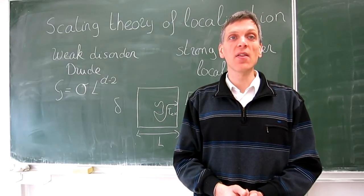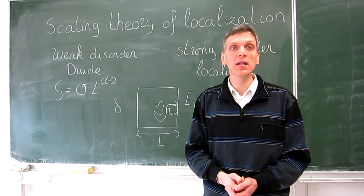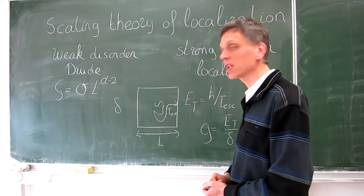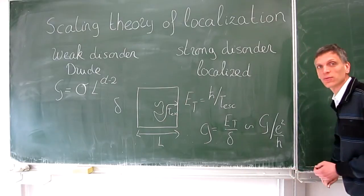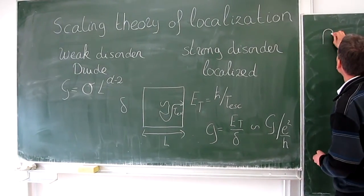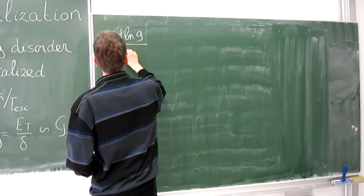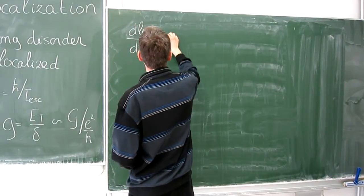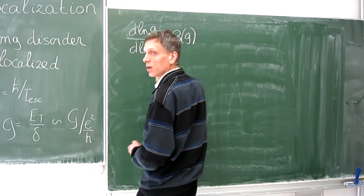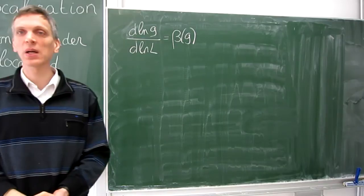This ansatz says that in order to find how the dimensionless conductance g changes with the block size L, it is sufficient to know g itself. A little bit more quantitatively and written in terms of a differential equation, this ansatz says d log g d log L is a function beta which depends on g only. This ansatz is known as single parameter scaling.